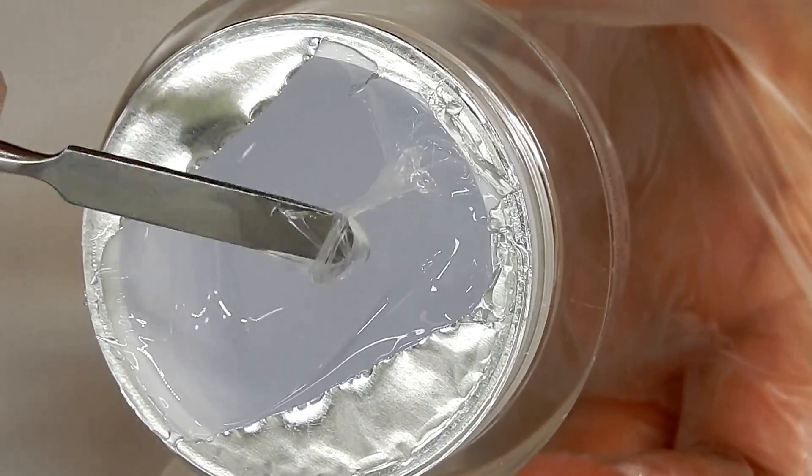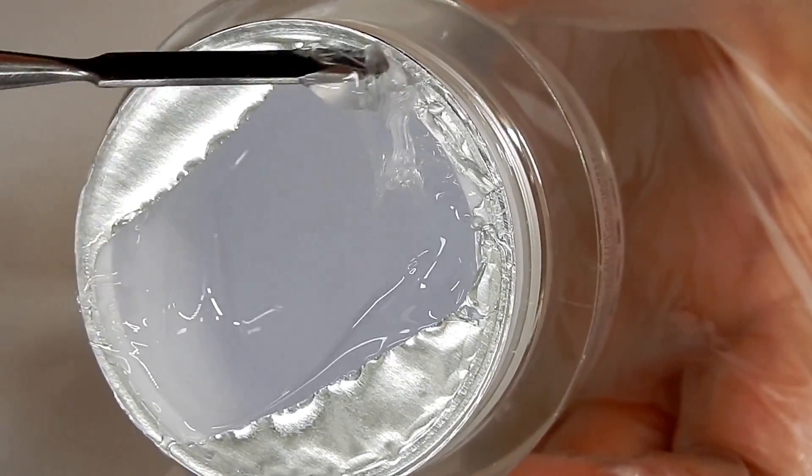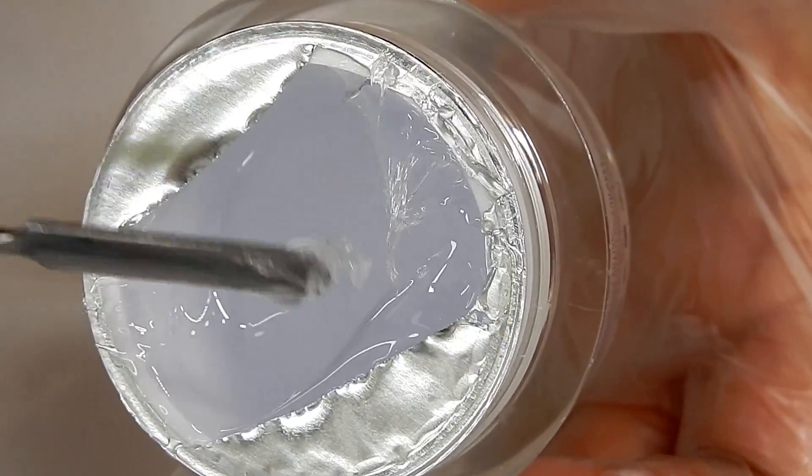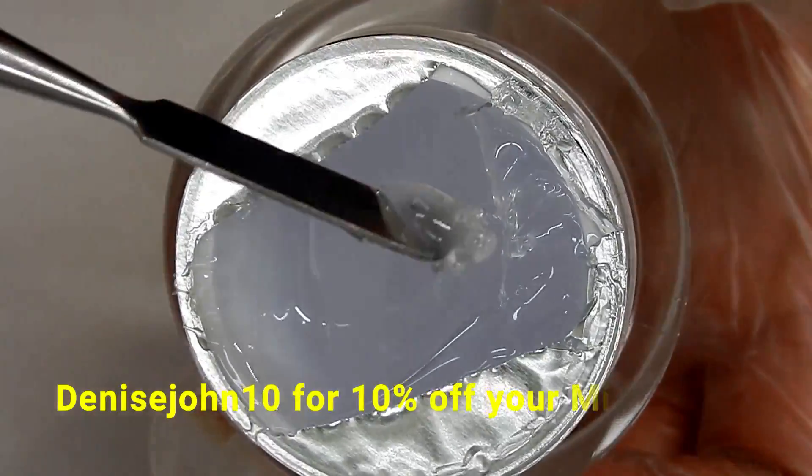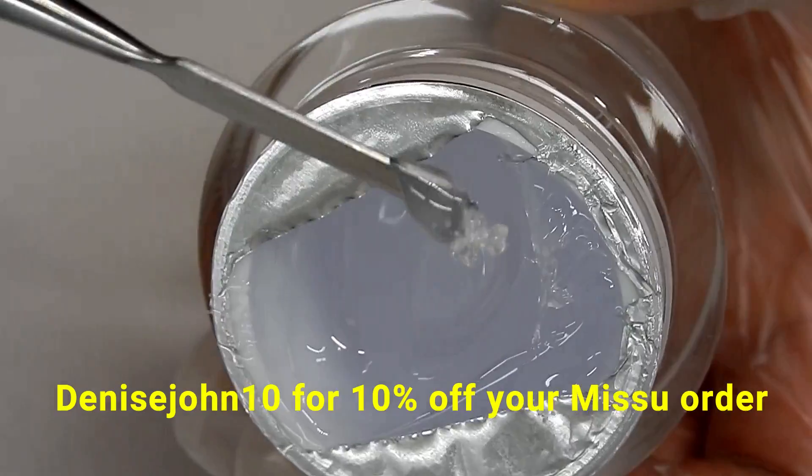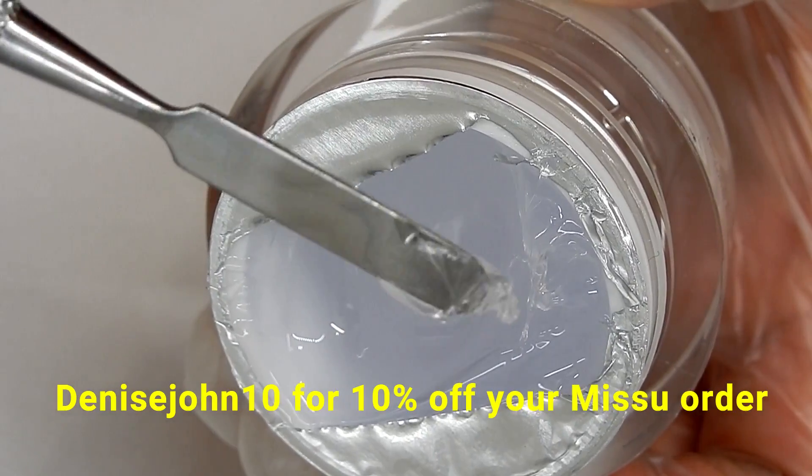It's a little bit stringy. I do want to give you all a tip: if you have a polygel that's like this, a little bit stringy, you can put it in the refrigerator and cool it, and it will be a little bit more manageable for you.